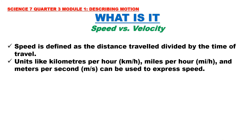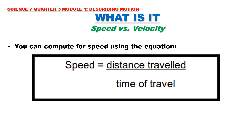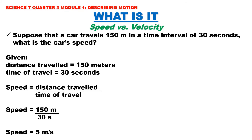Now let us go to speed versus velocity. Speed is defined as the distance traveled divided by the time of travel. Units for speed include kilometers per hour, miles per hour, and meters per second. We can compute speed using the equation: speed equals distance traveled divided by time of travel.